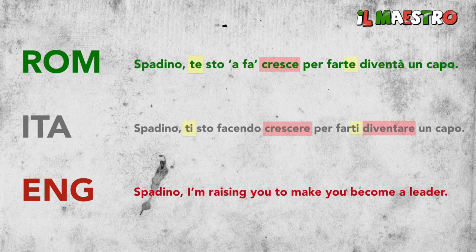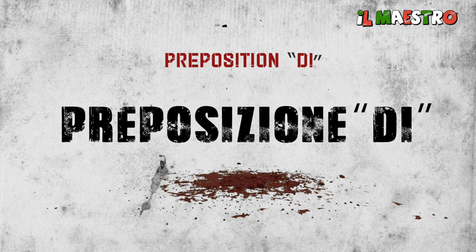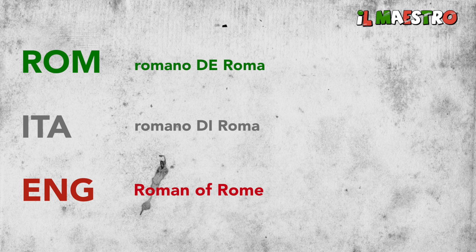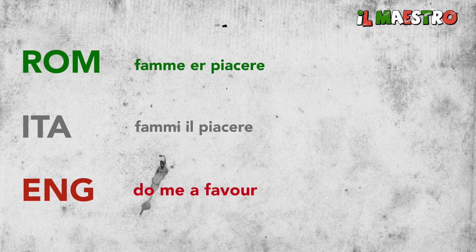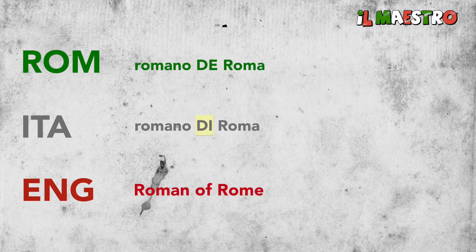Numero due: preposizione di. Preposition 'di.' Everybody knows famous expressions such as 'Romano de Roma' — 'Romano di Roma,' Roman of Rome — or 'Ma fammi il piacere,' 'do me a favor.' Therefore, the preposition 'di' becomes 'de' in Romanesco.